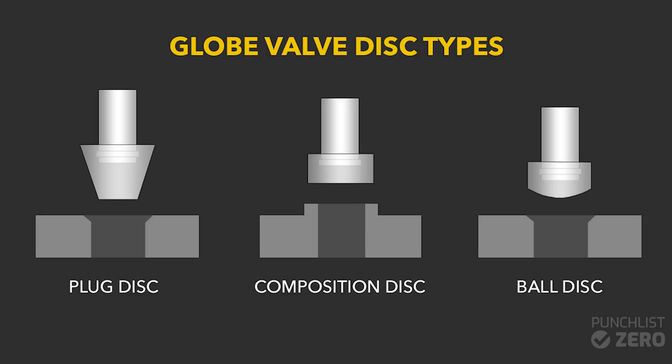Stainless steel applications are common where pipe system specifications require additional corrosion resistance. Globe valves provide a variety of options for disc construction. A plug type disc provides maximum erosion resistance via a long and tapered design.